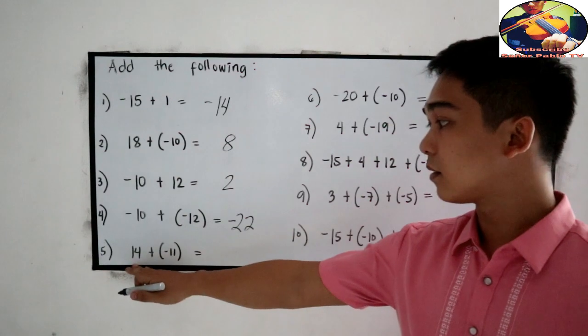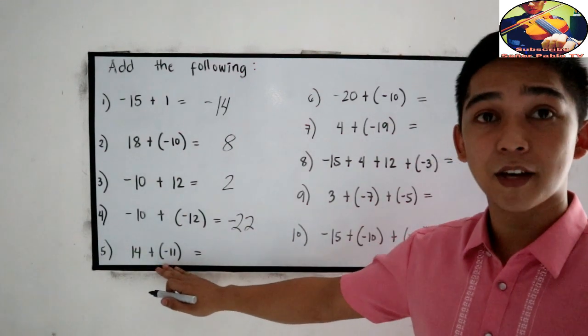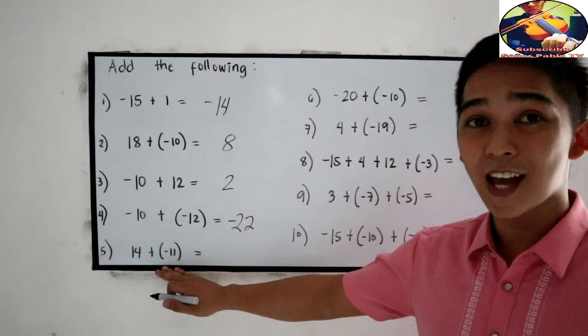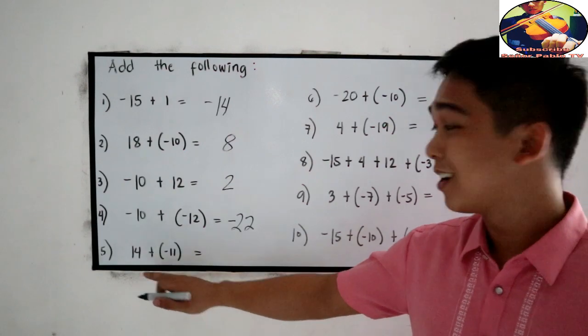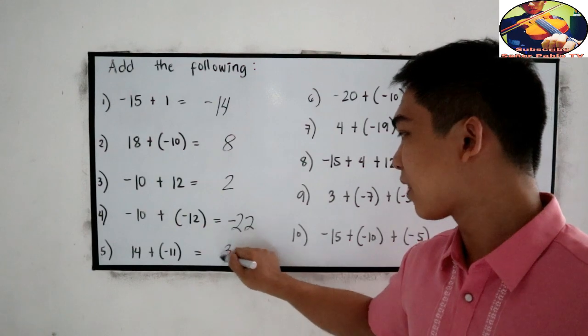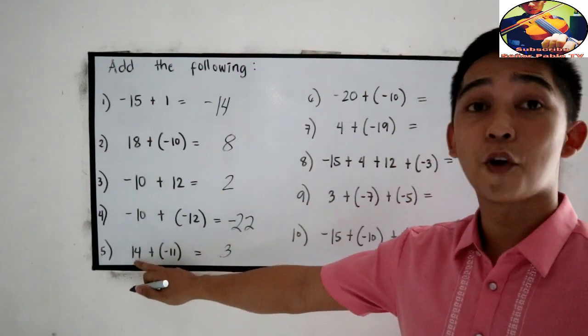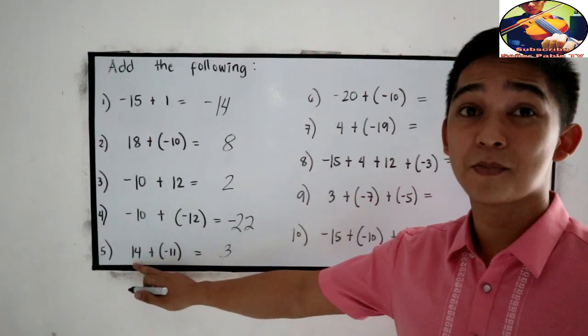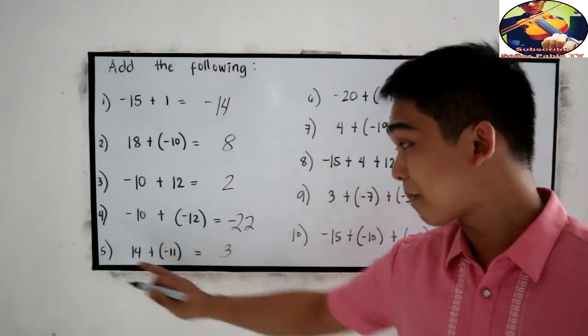Next, 14 plus negative 11. Unlike signs, so subtract the numbers. 14 minus 11, that is 3. 14, that's a bigger absolute value. So positive 3.